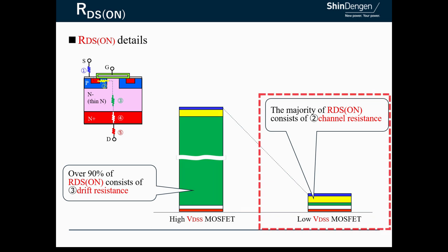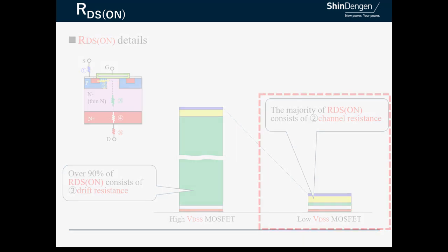On the other hand, in lower voltage MOSFETs, the drift layer resistance is low, so the emphasis is on reducing channel resistance and increasing cell density by miniaturizing the cells.